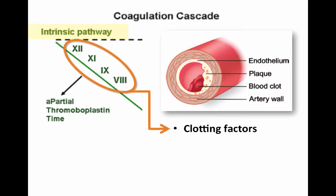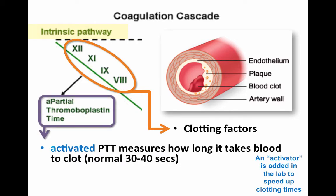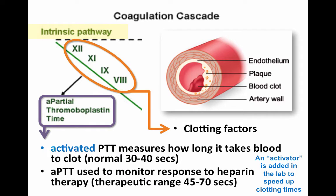That activates all those clotting factors, and then we use the PTT or activated PTT to measure how long it takes for the blood to clot. Normal range is about 30 to 40 seconds. An activator has been added in the lab to speed up the clotting time so there's a shorter reference range. The PTT is used to monitor the response to heparin therapy, with our therapeutic range being 45 to 70 seconds.